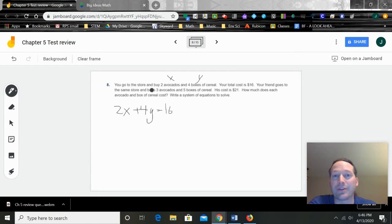So we have an equation here. It says you bought two avocados, so 2x. And we don't know the cost of the cereal, but we do know that you bought four boxes of cereal. So you got two of the avocados, four of the cereals, and it cost you 16 bucks. Your friend goes there, buys three avocados, and your friend really likes cereal, got five boxes of cereal. And that's a total cost of $21. Well, now what we have to do is, this one's easiest to use elimination.